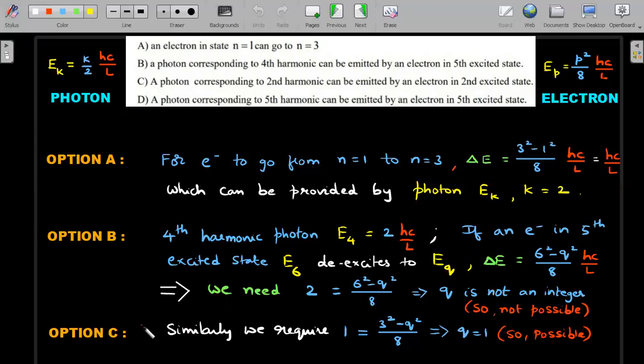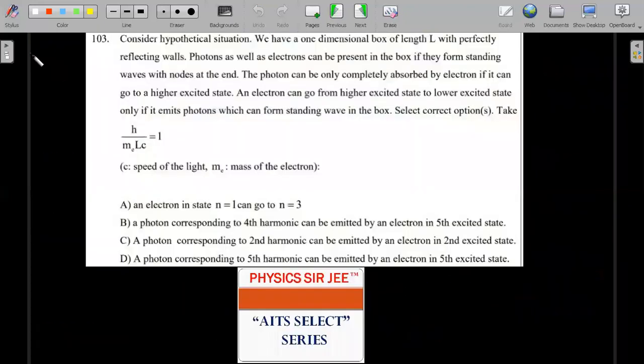Similarly, for option C, if you check, second harmonic you substitute 2 here, then it becomes 1. If it has to de-excite from a second excited state, that means it should have 3 squared minus q squared by 8 for an electron. You rearrange, you end up getting q is 1, and this time it's an integer, so it's definitely a possibility. On similar lines, D option you can check on your own, and I think you'll end up getting D is also possible. So except B, all other three options are correct.